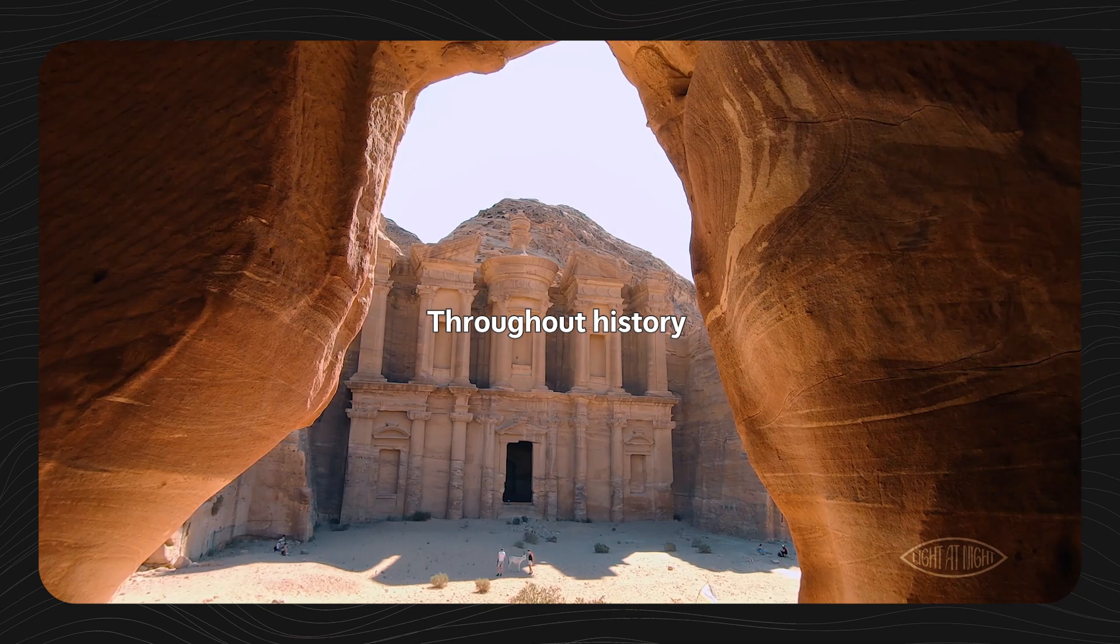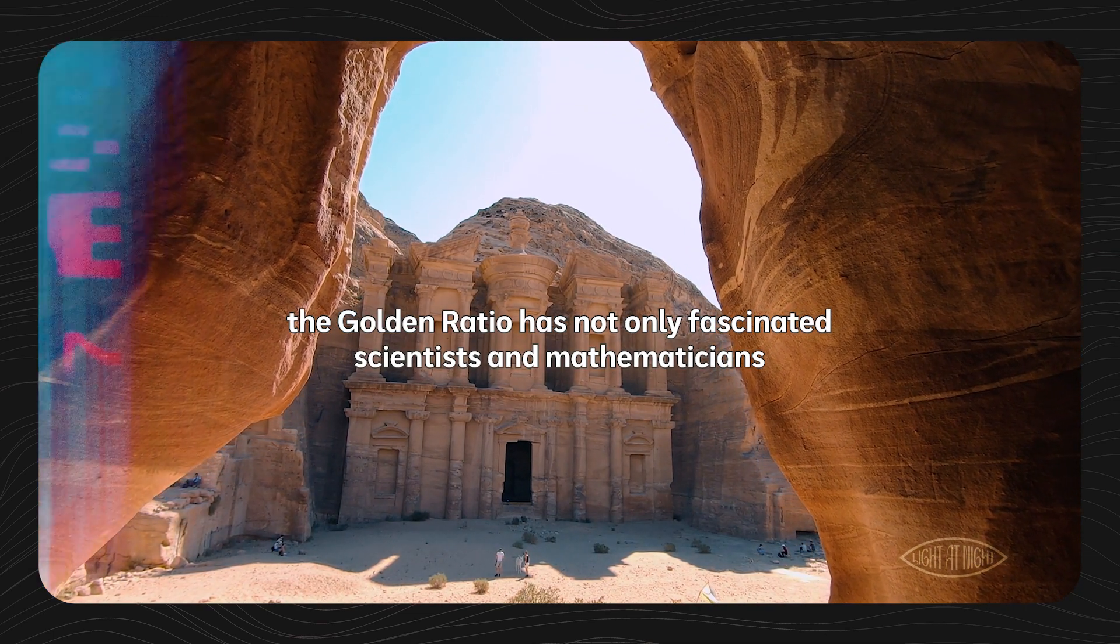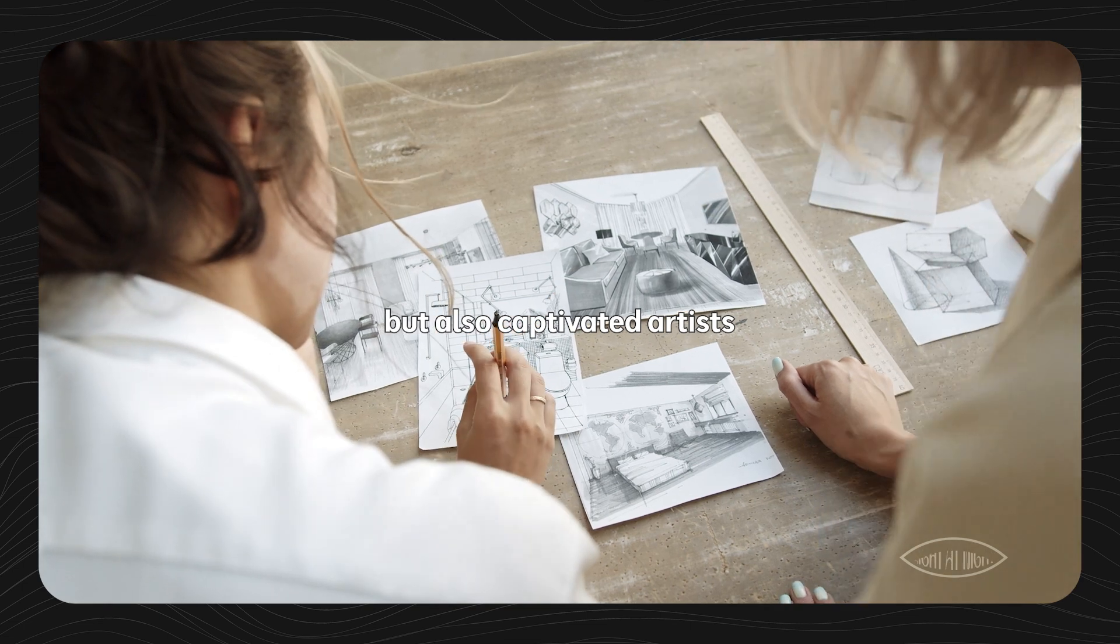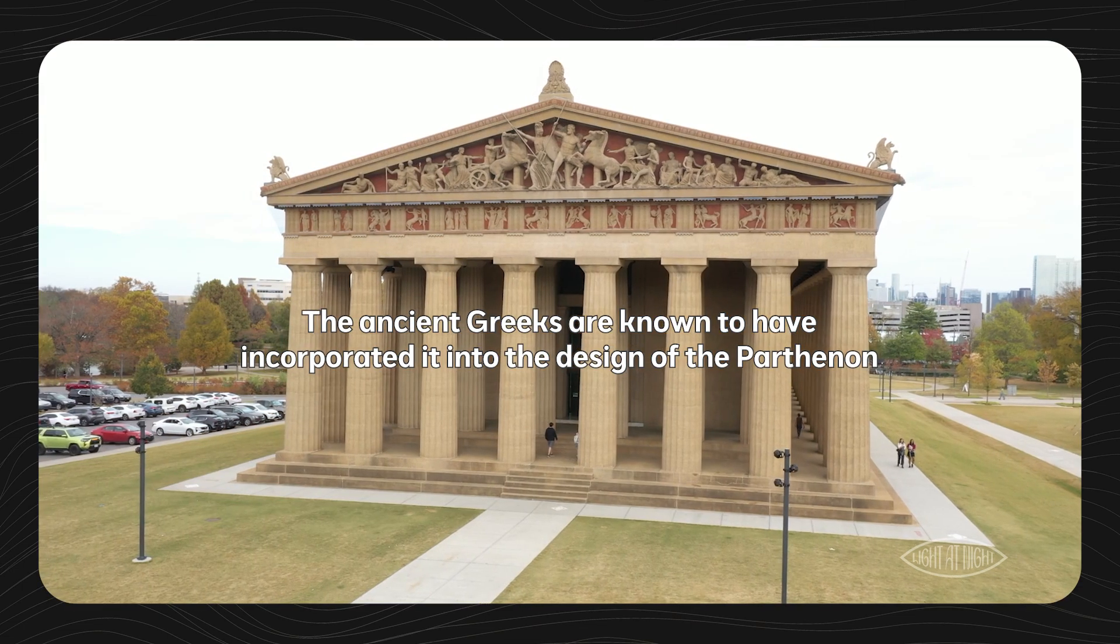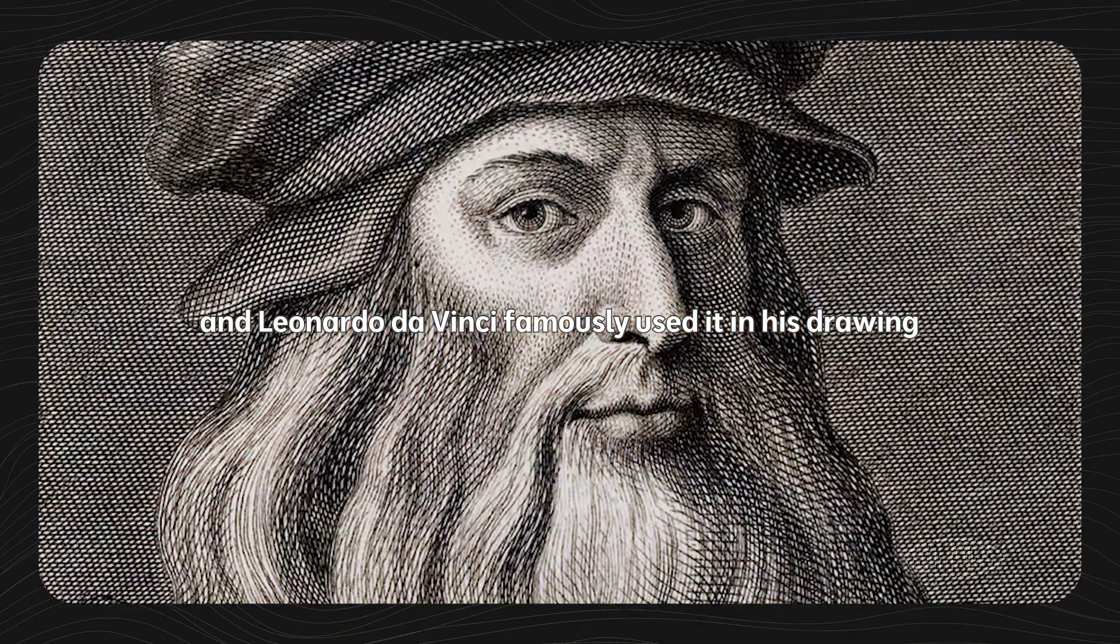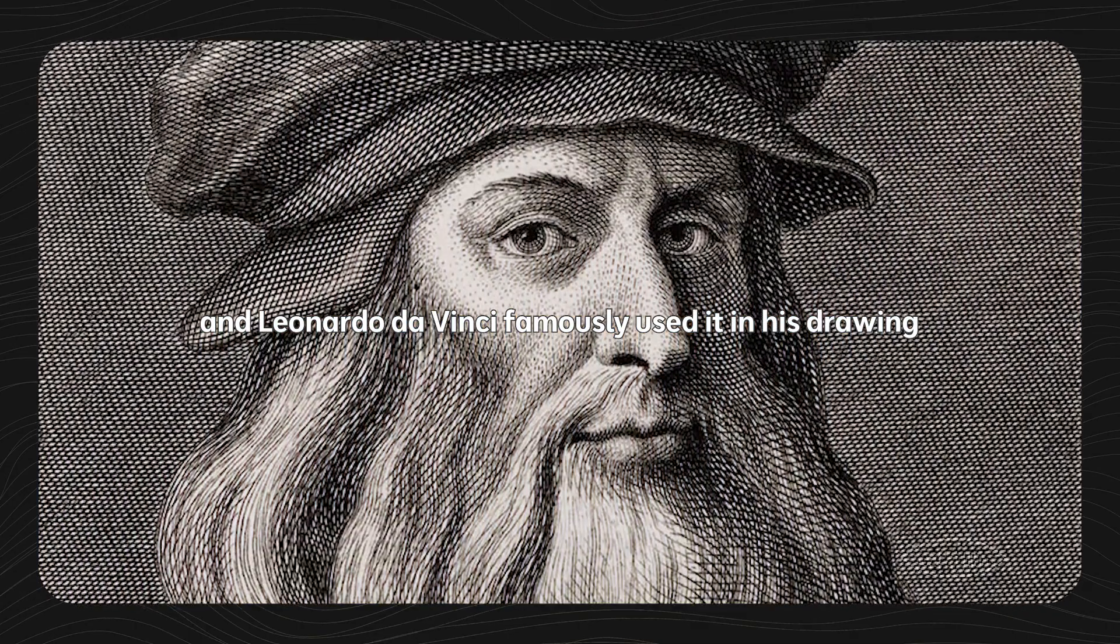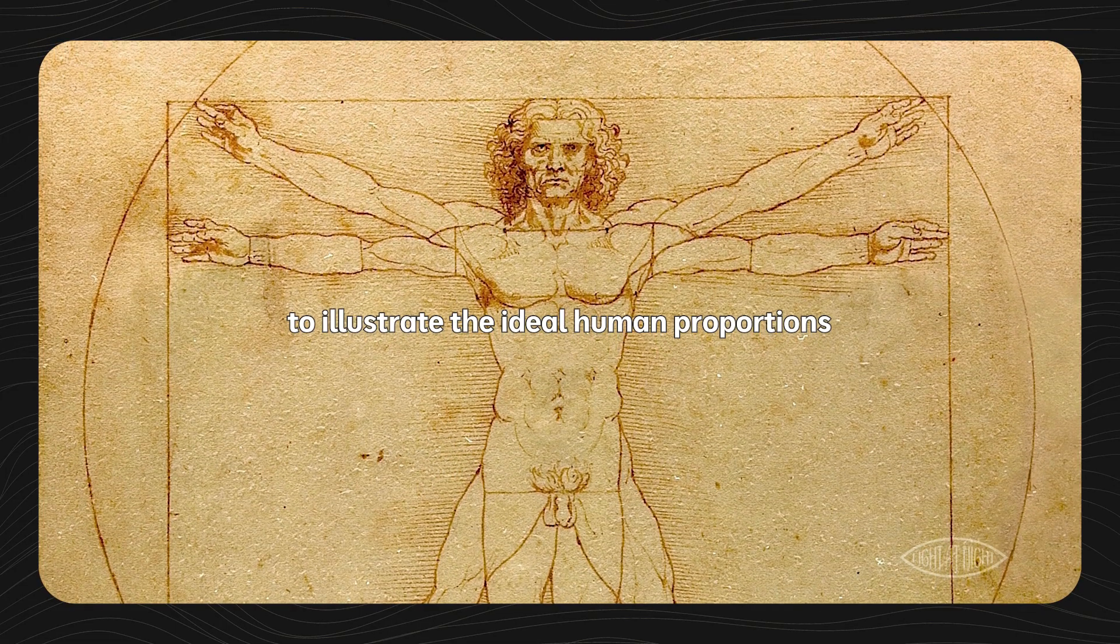Throughout history, the golden ratio has not only fascinated scientists and mathematicians, but also captivated artists, architects, and even musicians. The ancient Greeks are known to have incorporated it into the design of the Parthenon, and Leonardo da Vinci famously used it in his drawing, Vitruvian Man, to illustrate the ideal human proportions.